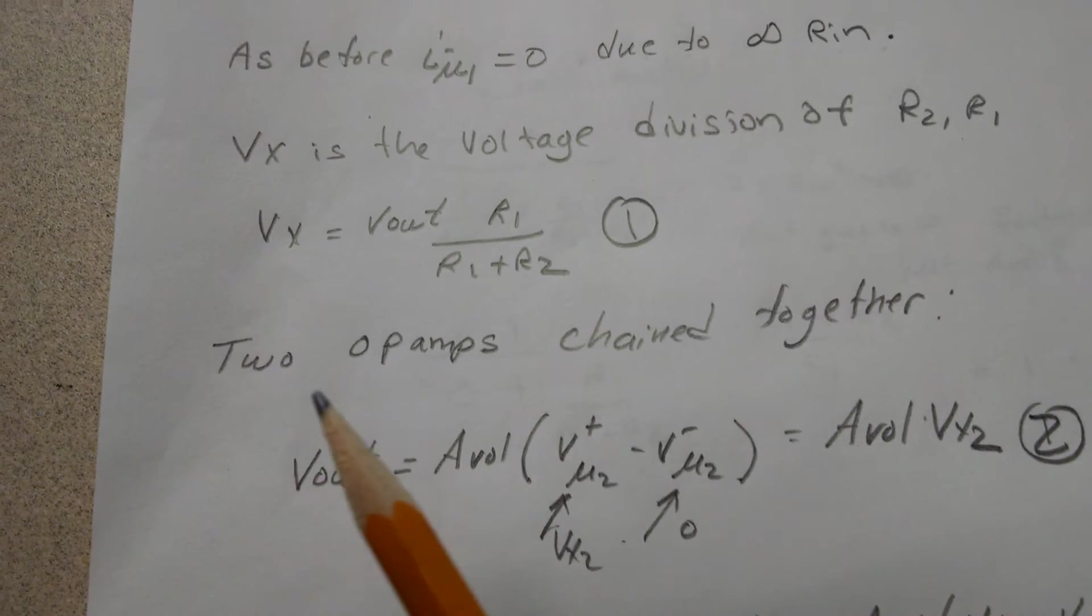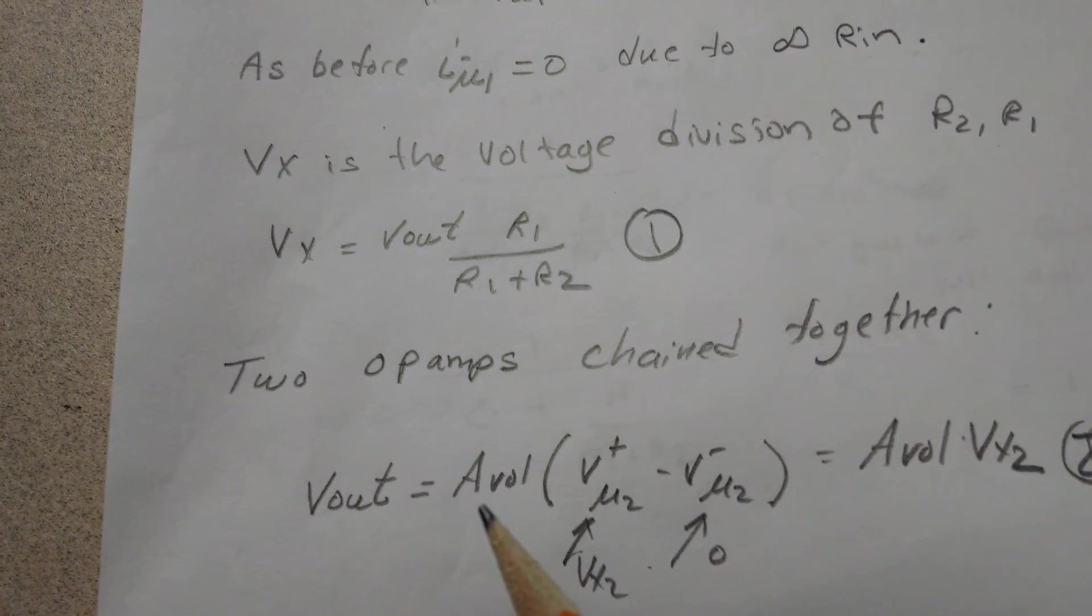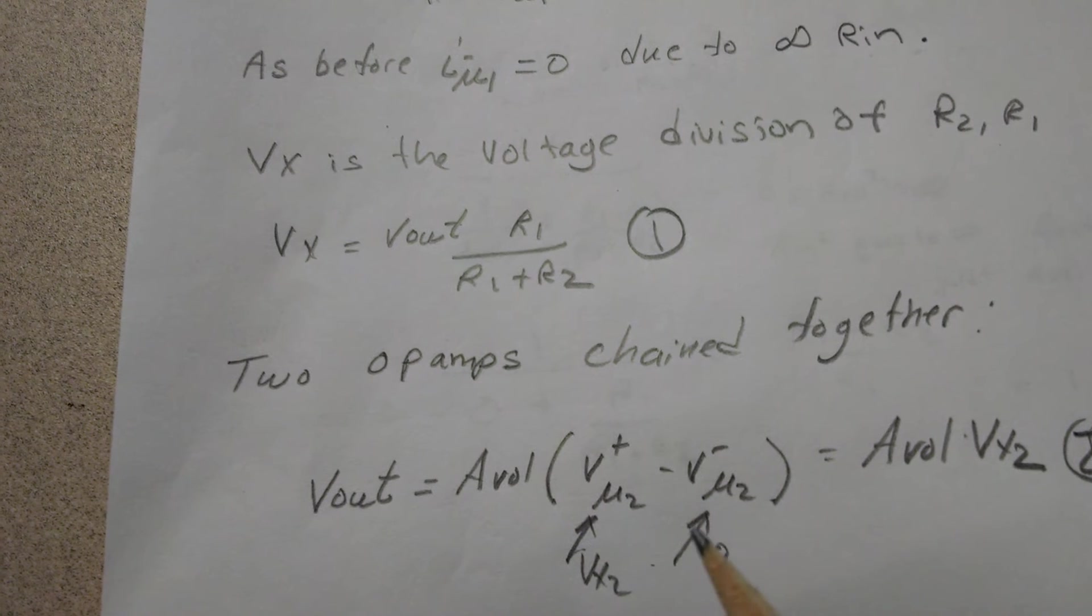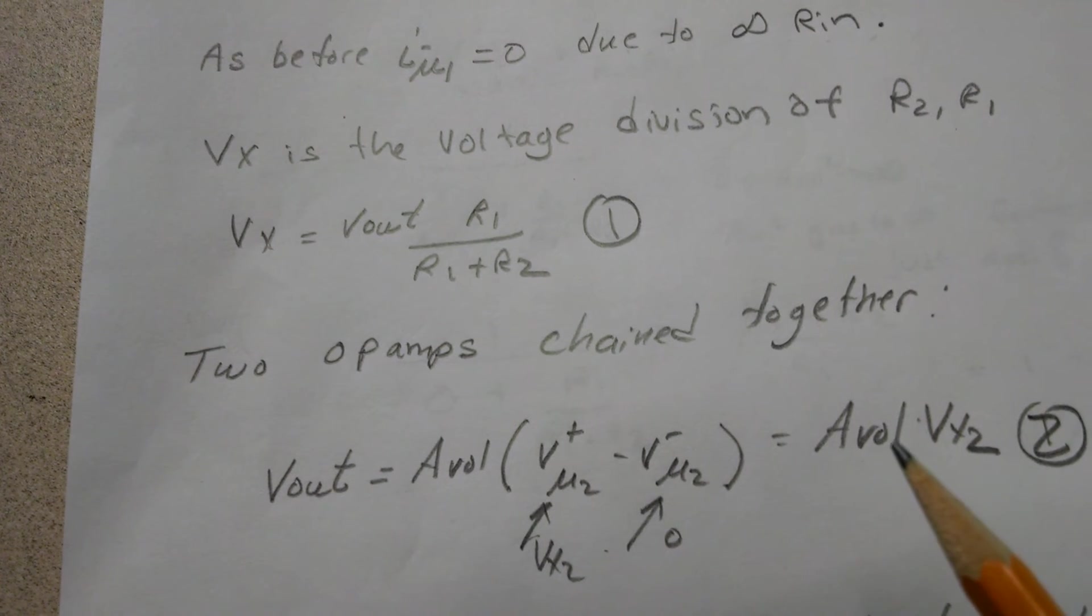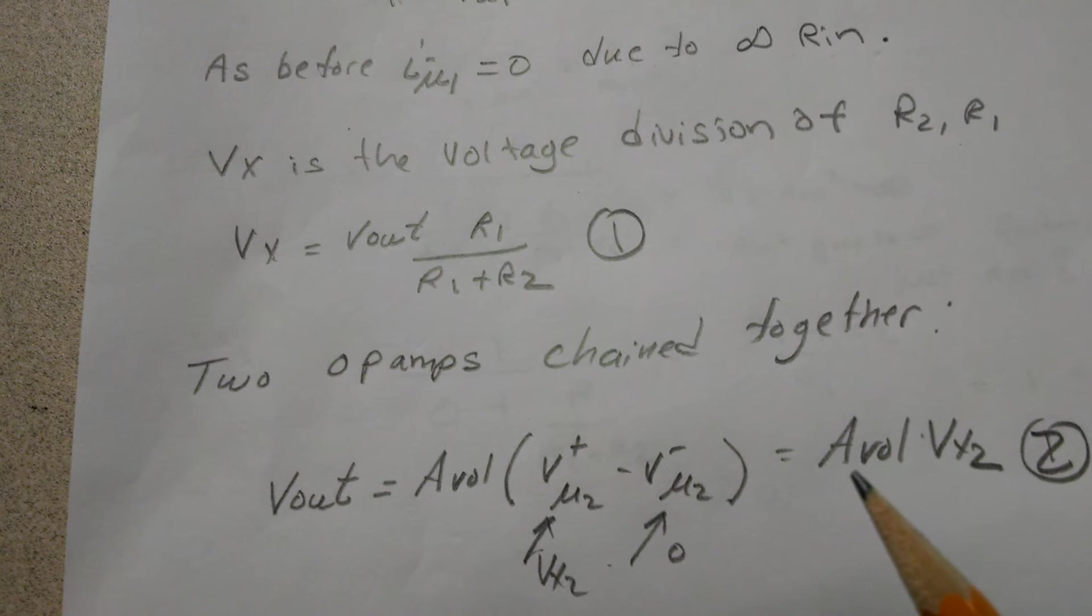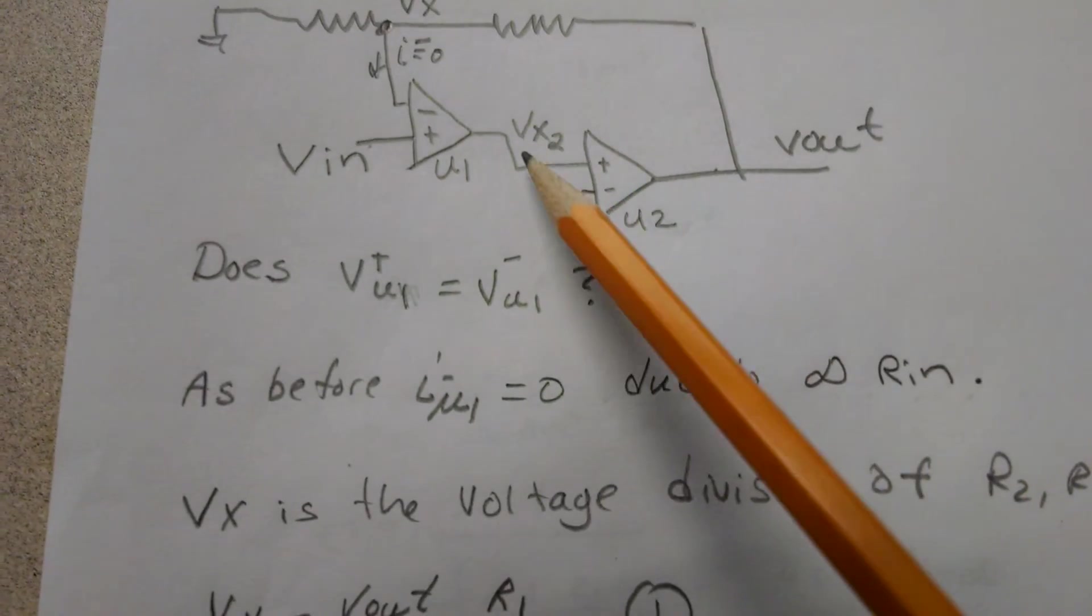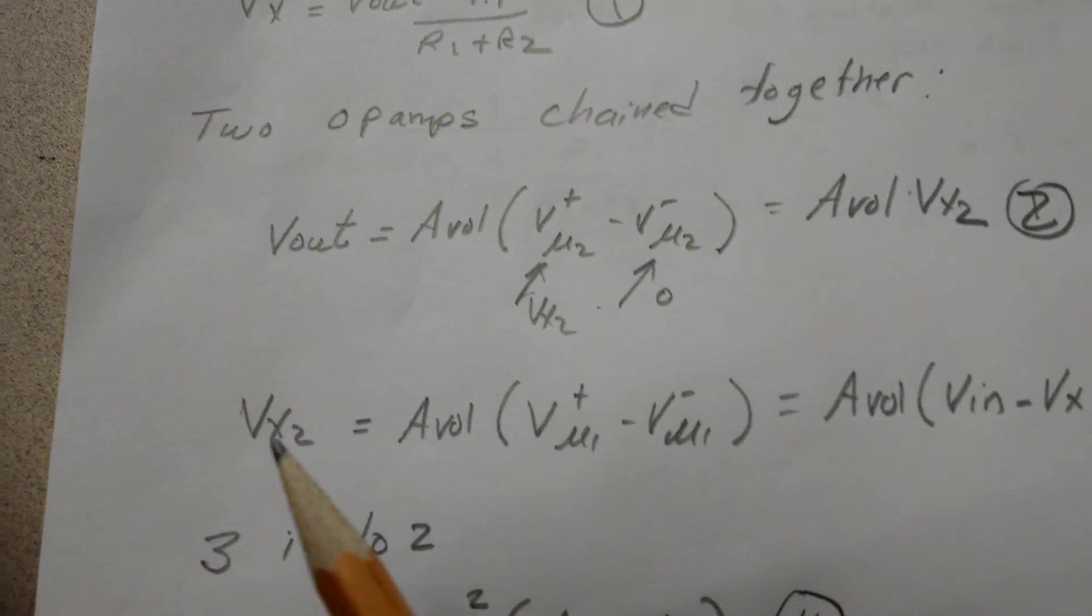That's equation 1 and it's just like equation 1 from the non-inverting op-amp case. Well, now I've chained these two op-amps together, so Vout equals the open-loop gain of the difference of the inputs on U2, which when you substitute it in the circuit is just open-loop gain times Vx2.